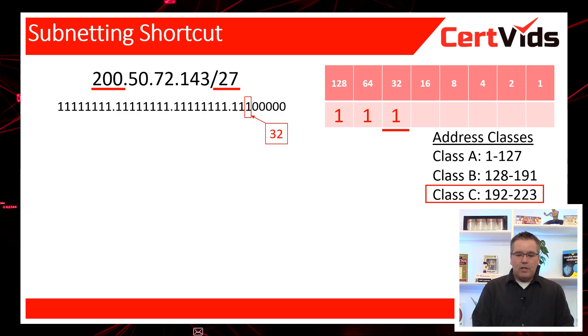So now that we know the increment is 32, we start listing out the network IDs. Because it's a class C address, every network ID starts with those first three octets. So we do 200.50.72.0 as the first network ID. And then that last octet is going to increment by 32 for each network ID. So I write out almost like a timeline to visualize the placement of these numbers. Starting at zero, the next network ID would be 32, then 64, then 96.